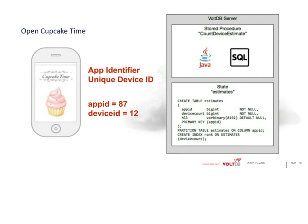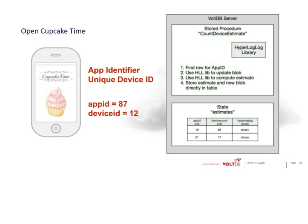An overview of the stored procedure pseudocode: it finds the row in the database for the particular app ID, uses the HyperLogLog library to update the blob stored in that row with the new device ID, then uses HyperLogLog to compute the current estimate. It then stores the new blob and the new estimate — which may or may not have changed — back into the table. The estimates table might show app ID 12 with an estimate of 86 and a blob attached, app ID 21 with 17 users today and its blob.